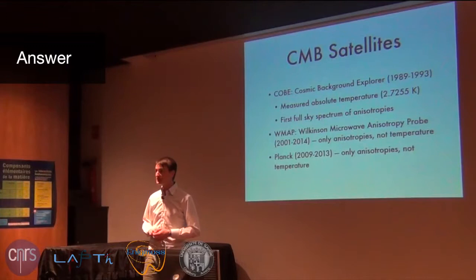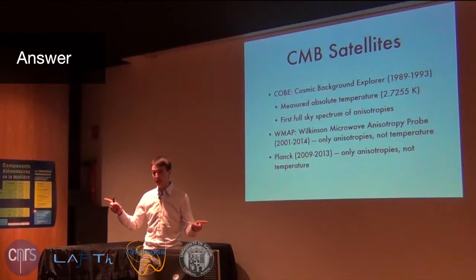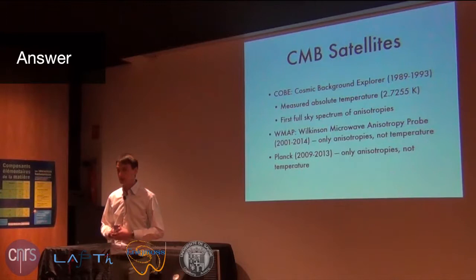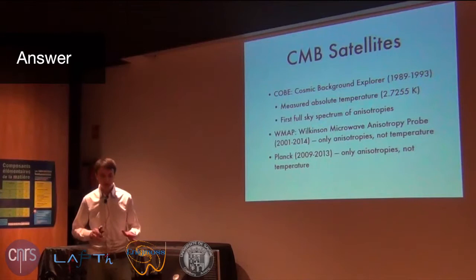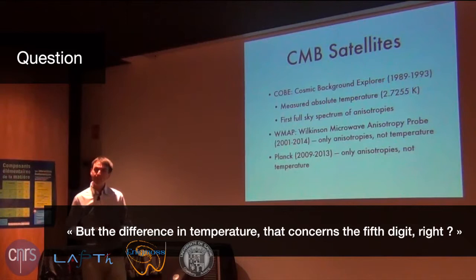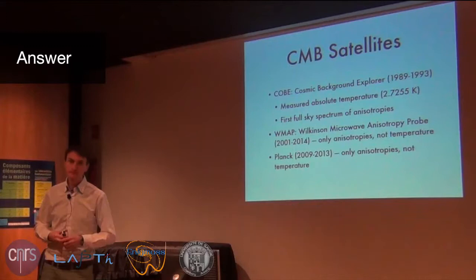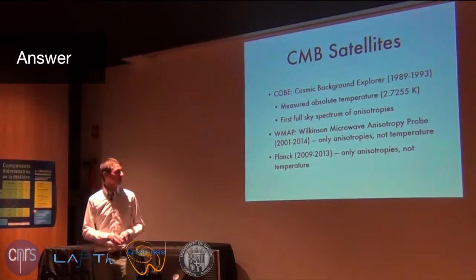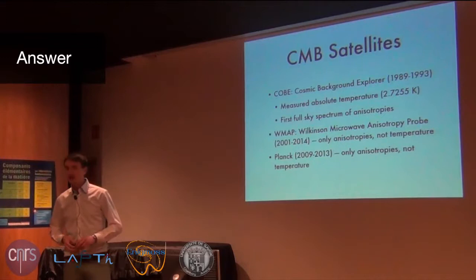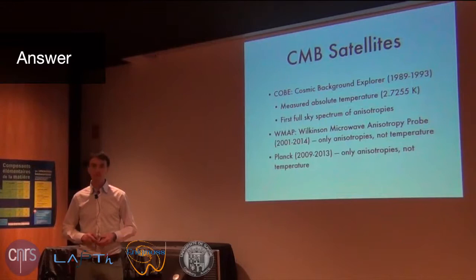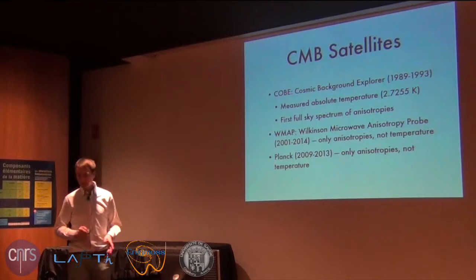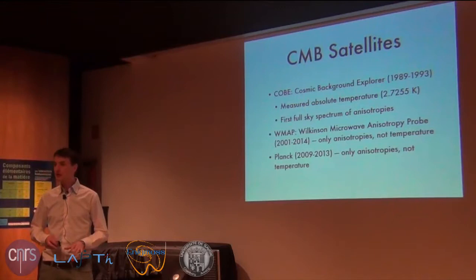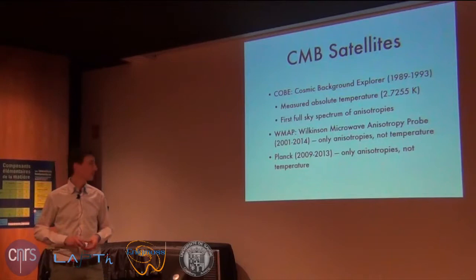WMAP really doesn't even measure intensity in one direction — it only measures the difference in intensity in two directions, so WMAP has no handle on the absolute temperature. The difference in temperature concerns the fifth digit — one in ten to the fifth. For WMAP the absolute temperature could have been a different value from the method of measurement. I think this is also true for Planck — Planck certainly did not measure the temperature at that accuracy, it only measures anisotropies at that accuracy.